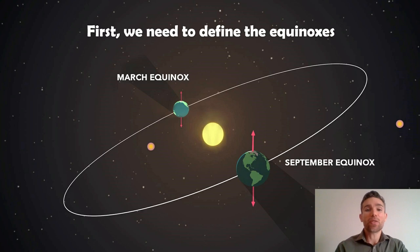First, before we actually look at the first point of Aries, we need to define what the equinoxes are. We have two of them: the March one and the September one. This is where the Earth's tilt, because Earth is tilted relative to its orbital plane as it goes around the Sun, gives us our seasons. At those two locations on its orbit, it's neither tilted towards the Sun or away.